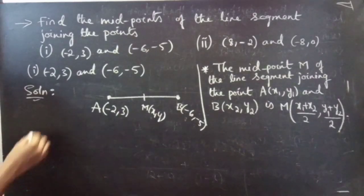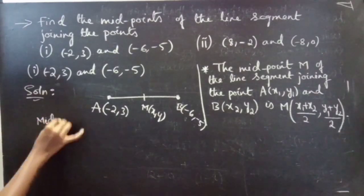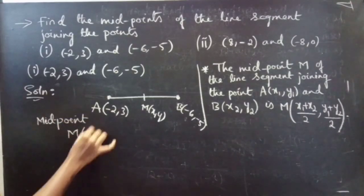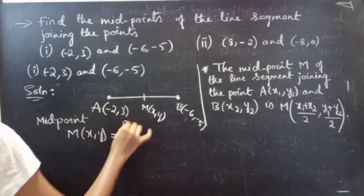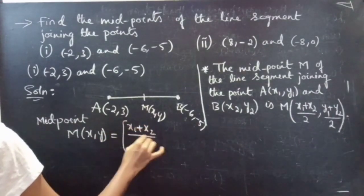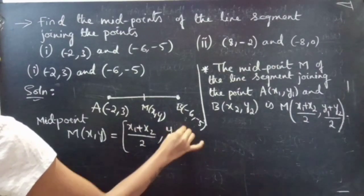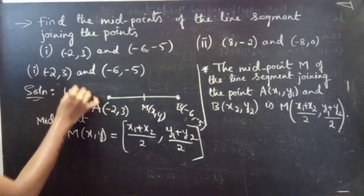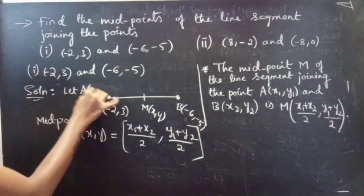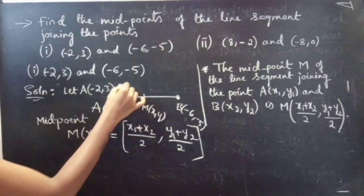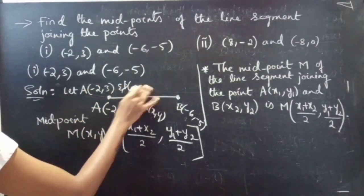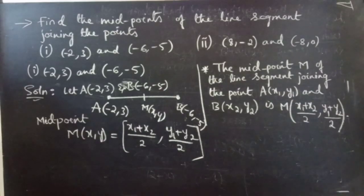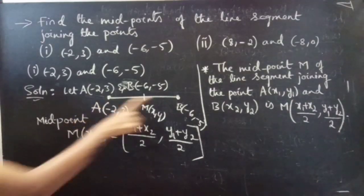Solution: midpoint M x comma y equals to X1 plus X2 by 2 comma Y1 plus Y2 by 2. Let A minus 3 comma 2 and B minus 6 comma minus 5 be the endpoints of the line segment.